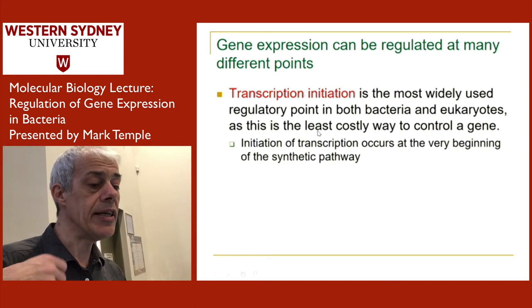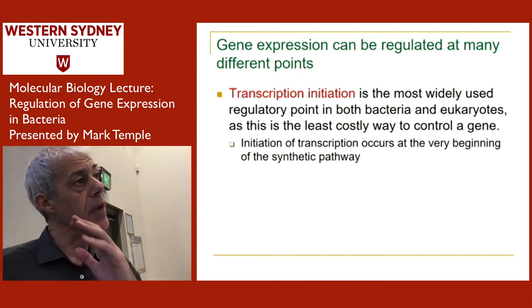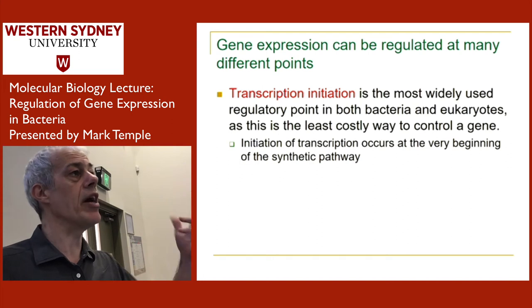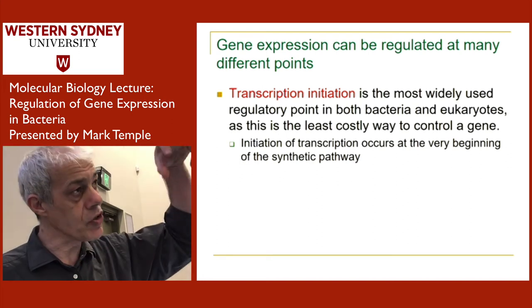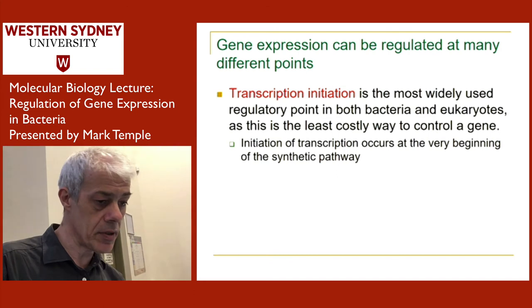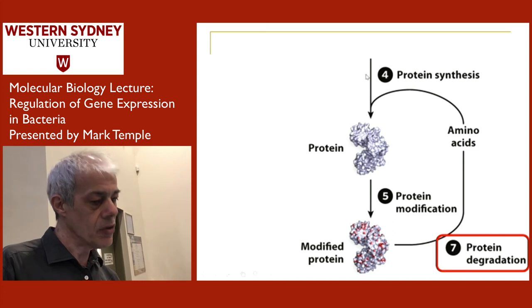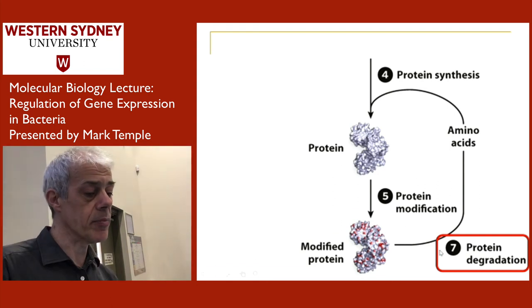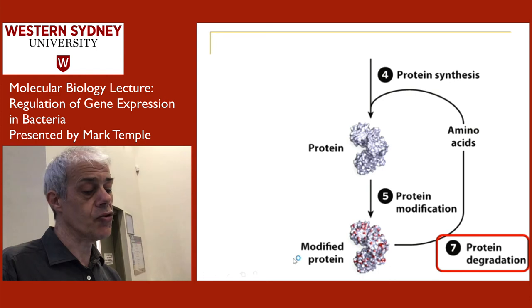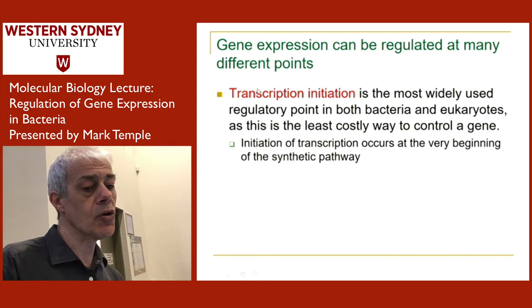The book says transcription initiation is the least costly way to control a gene. You don't want to expend energy making a protein and then degrading it without using it — that's not a particularly efficient control point. The least costly point is to control the start of the process, which is why transcription initiation is so important.